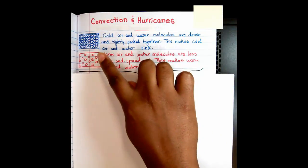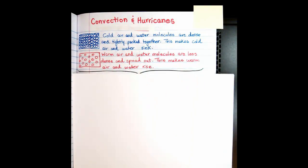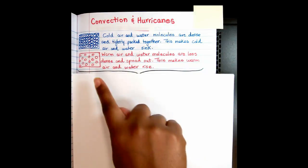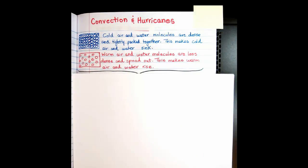If you take a look, cold air and water molecules are more dense and tightly packed together — that's what makes cold air and water sink. Warm air and water molecules are less dense, they're more spread out, and that's what makes warm air and water rise.